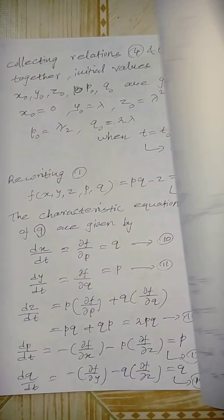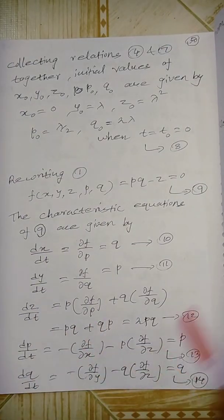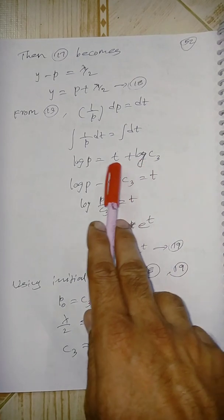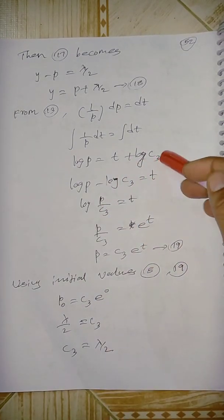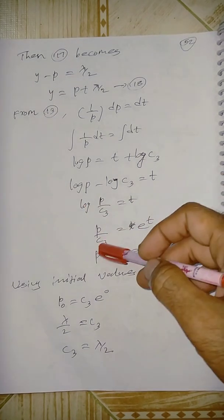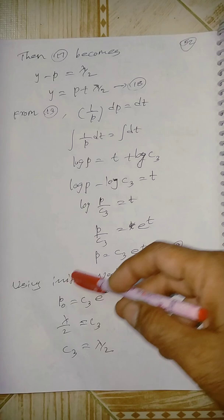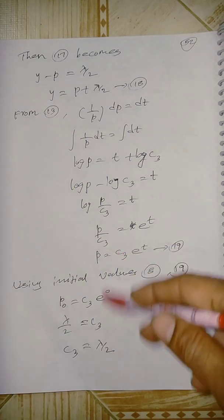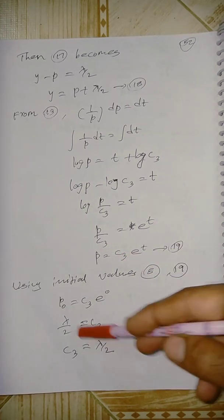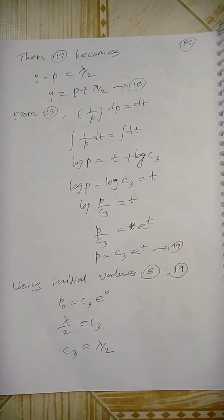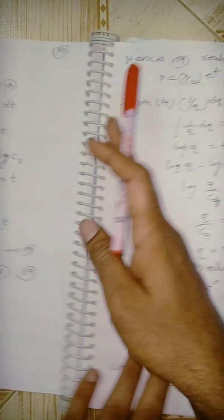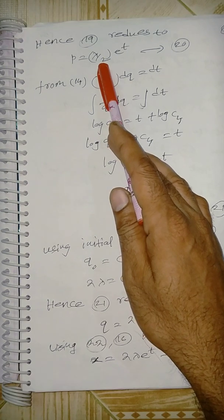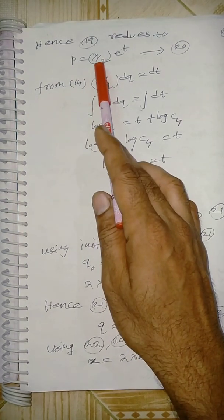From equation 13, dp/dt = p. Using the variable separable method: (1/p)dp = dt. Integrating: log p = t + log C3. So p = C3·e^t. Using initial values: p0 = C3·e^(t0) = C3·1, so C3 = p0 = lambda/2. Therefore p = (lambda/2)·e^t.